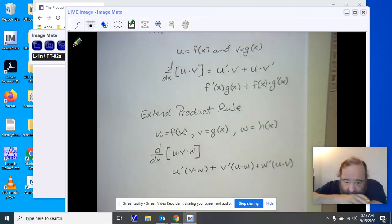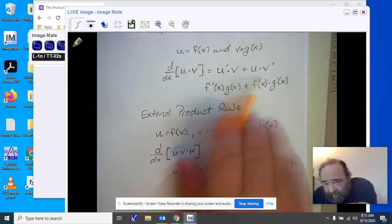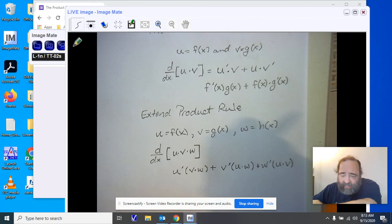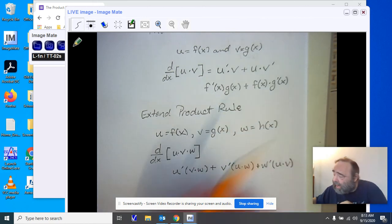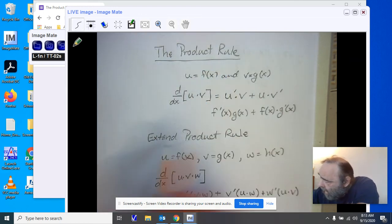You'll notice each piece has the derivative, and the other two don't. Just like as we saw here, we do one derivative at a time, leaving the other piece alone, and we have a plus in between. So here you're looking at the product rule and the extended product rule.